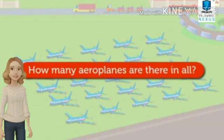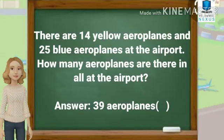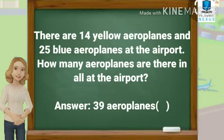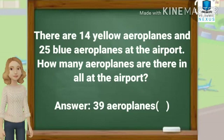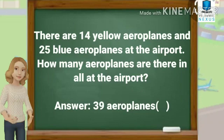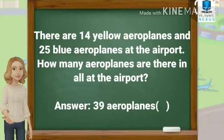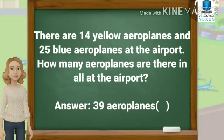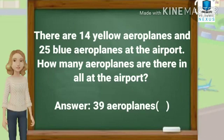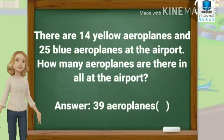First and foremost, you need to analyze the question and understand the information being given in the question. So, the information given are there are 14 yellow aeroplanes and 25 blue aeroplanes. And our question is, how many aeroplanes are there in all? If you see the keyword 'in all', you need to add.